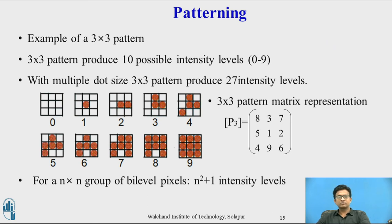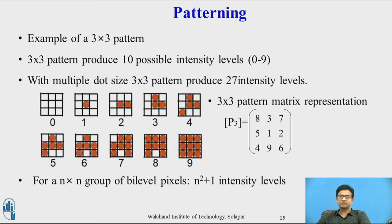A 3 by 3 pattern produces 10 possible intensity levels (0 to 9), and with multiple dot sizes, a 3 by 3 pattern produces 27 intensity levels. With 0 intensity and intensity 1 written in the matrix at the second row, second column, and sequentially placing 2, 3, and so on above — in this way we generate the matrix representation for the 3 by 3 pattern, P3. For an n by n group of bi-level pixels, it requires n² + 1 intensity levels.